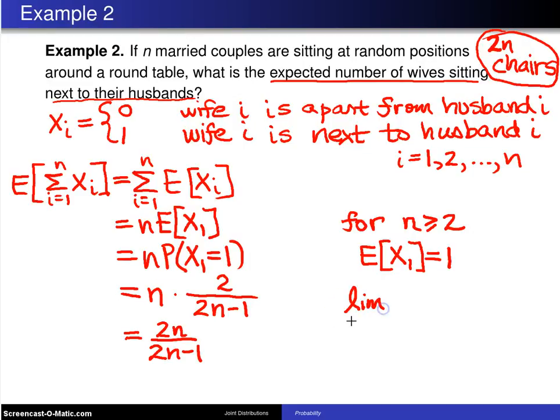Another thing that is kind of interesting about this is if you take the limit as n goes to infinity, as this table gets bigger and bigger, the expected number of wives sitting next to their husbands, so the expected value of the sum from i equals 1 to n of x sub i, in the limit, this expression goes to 1. So as that table gets larger and larger, the expected number of couples sitting adjacent to one another is equal to 1.